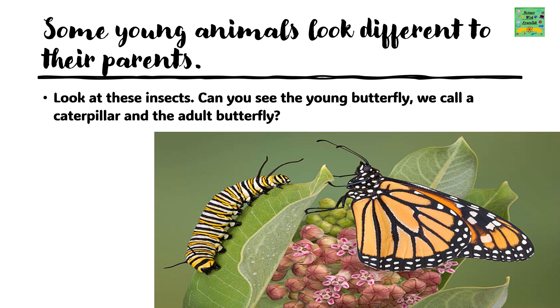Some young animals look different to their parents. Look at these insects. Can you see the young butterfly? We call it a caterpillar, and the adult a butterfly.